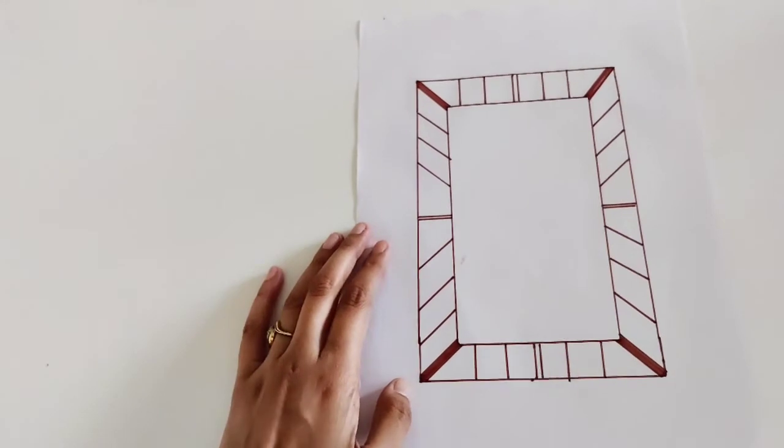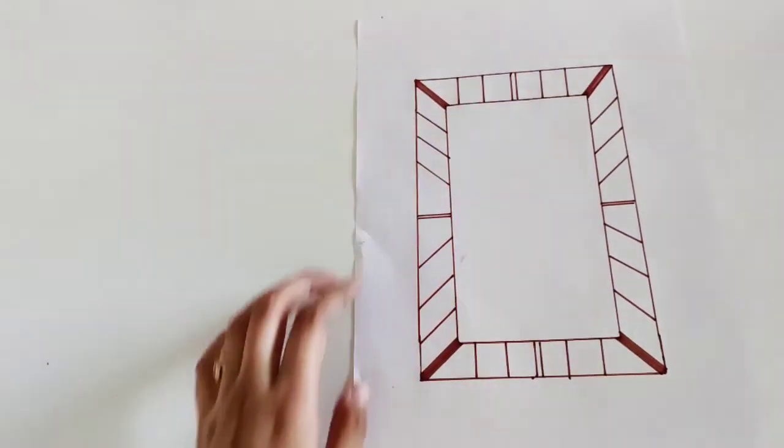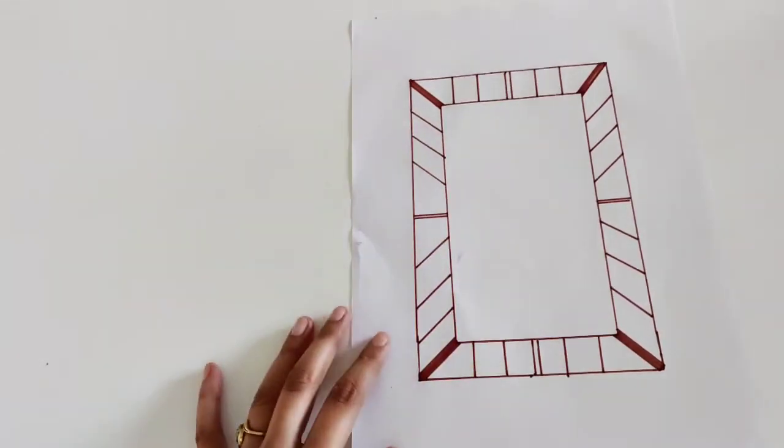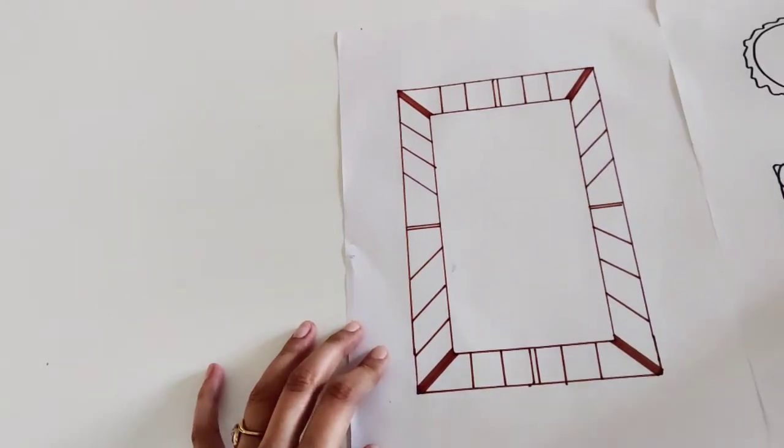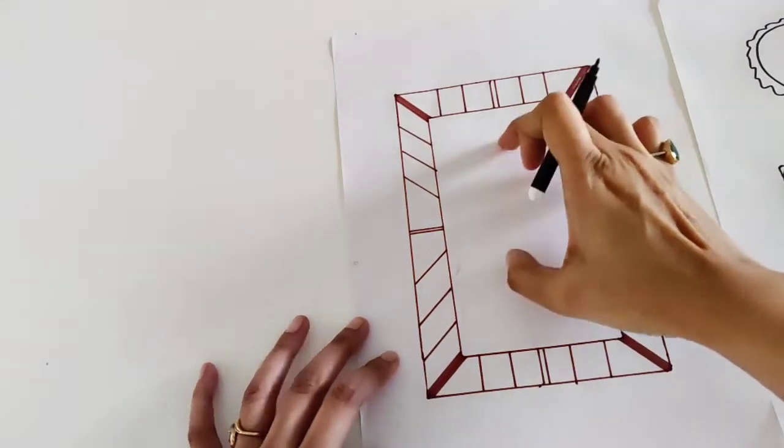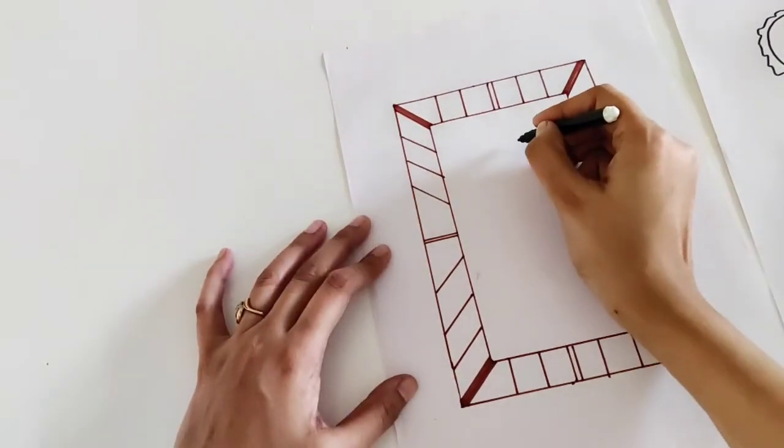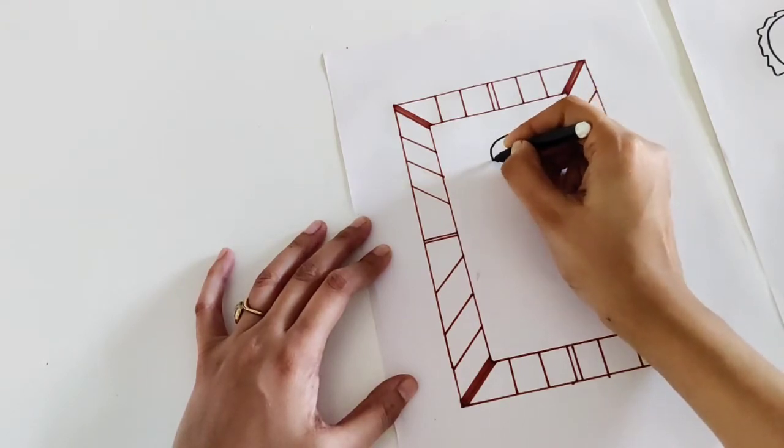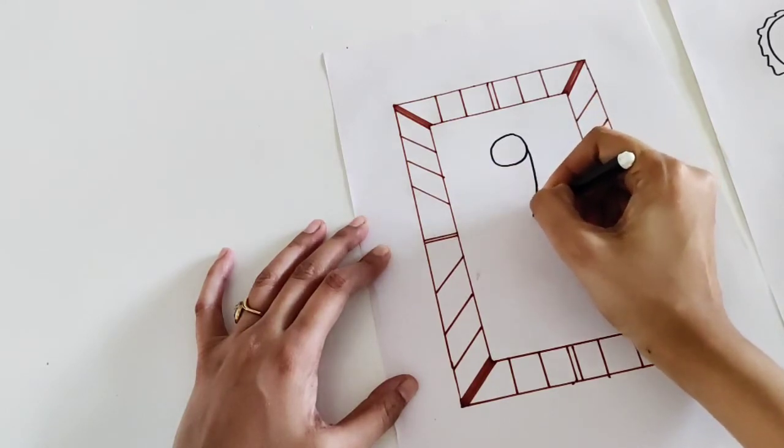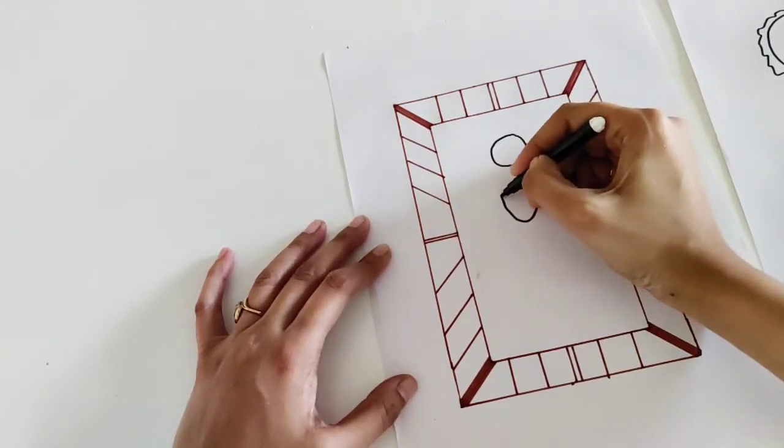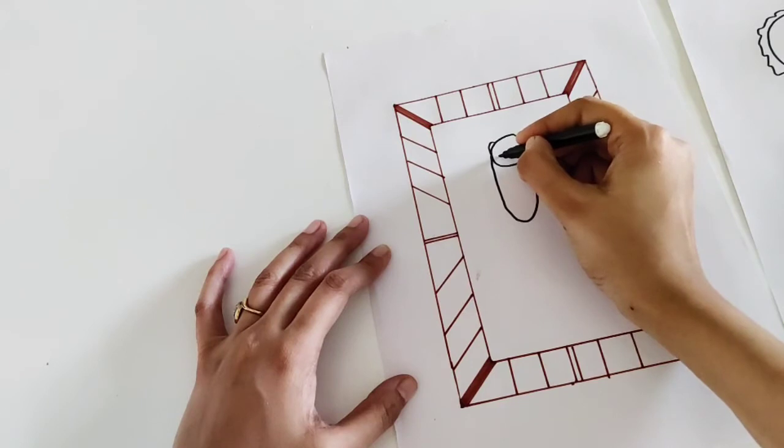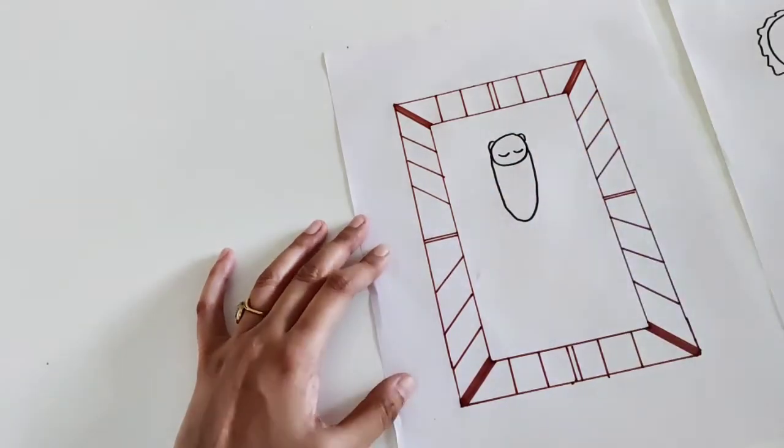So this is a crib that I have drawn. You can use a cradle or crib where the kids sleep. Using the basic shape, you can ask the kid who is in the crib, where is the baby. So here we have to draw a baby, a sleeping baby. The baby is sleeping in the crib. Join this, and the baby is sleeping.